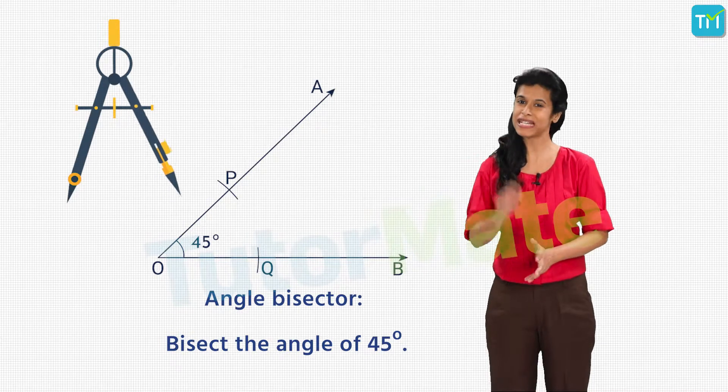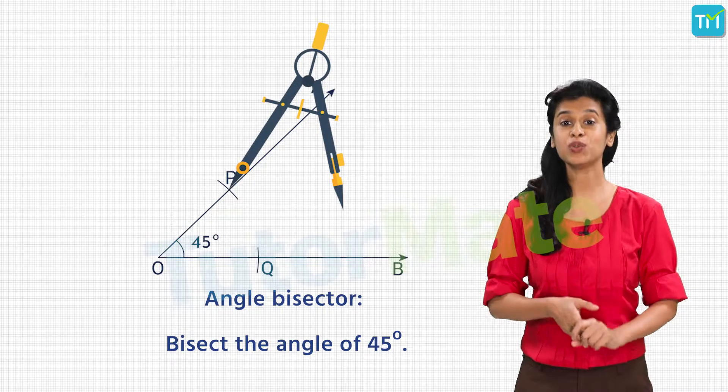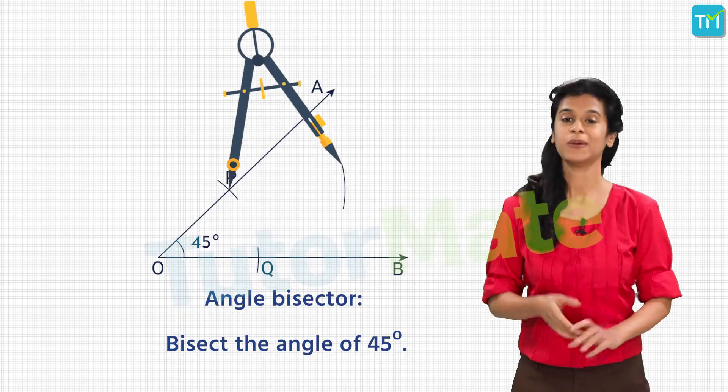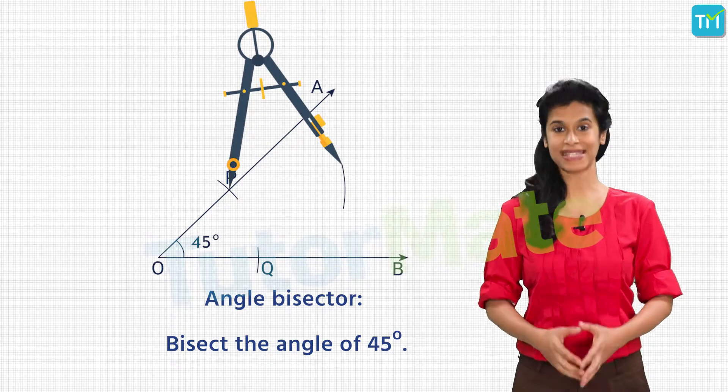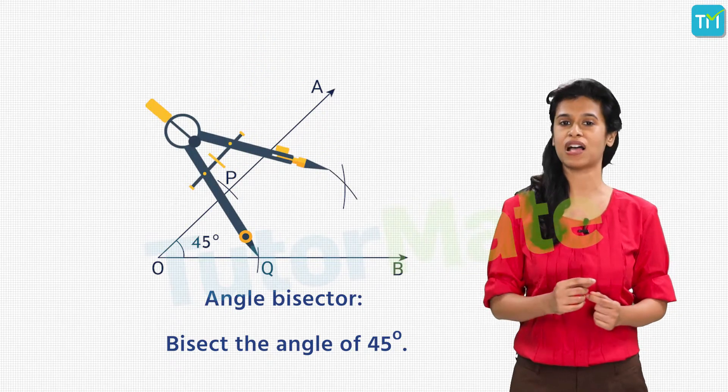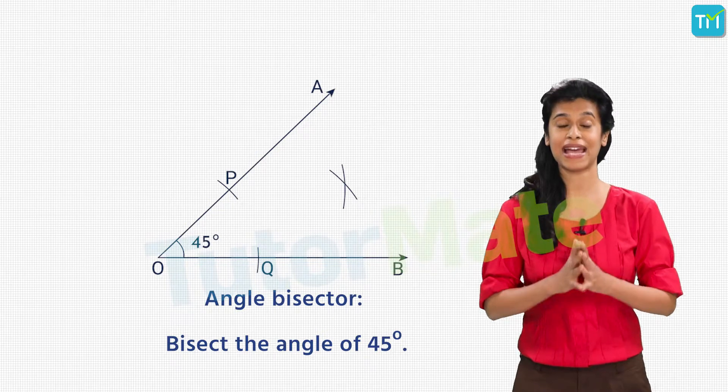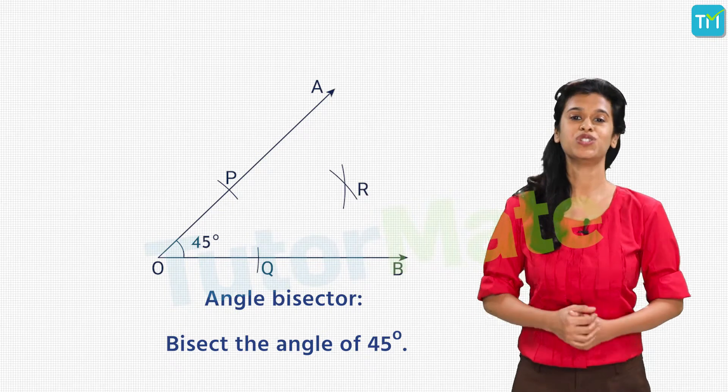Now, increase the radius on the compass a little, then keeping the center at P and using the new radius, draw an arc. With the same radius and a new center at Q, draw an arc intersecting the previous arc. Let's call the point of intersection of the two arcs as R. Now, join OR.